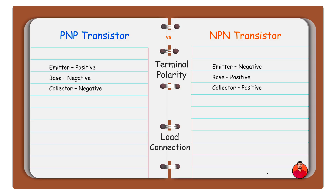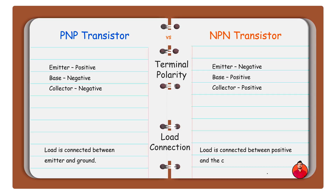In PNP transistor, load is connected between emitter and ground. In PNP transistor, load is connected between positive and the collector.